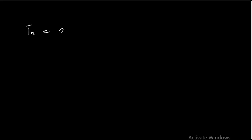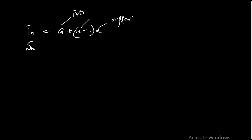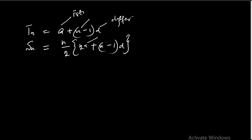From our lessons on series, we know that to find the nth term of a particular sequence, we say it is a plus n minus 1 into d, where a is the first term, d is the common difference, and n is the number of terms. The same thing applies when we are looking for the sum of these n terms: S of n equals n over 2 into 2a plus n minus 1 into d.